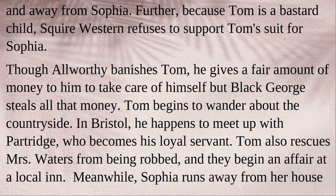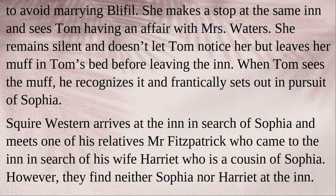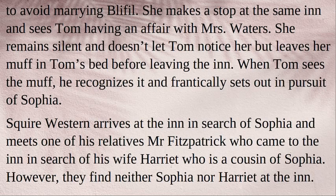In Bristol, Tom happens to meet Partridge, who becomes his loyal servant. Tom also rescues Mrs. Waters from being robbed and they begin an affair at a local inn. Meanwhile, Sophia runs away from home to avoid marrying Blifil. She stops at the same inn and sees Tom having an affair with Mrs. Waters. She remains silent and doesn't let Tom notice her, but leaves her muff in Tom's bed before leaving. When Tom sees the muff he recognizes it and frantically sets out in pursuit of Sophia. Squire Western arrives at the inn in search of Sophia and meets a relative, Mr. Fitzpatrick, who came searching for his wife Harriet — a cousin of Sophia. However, they find neither Sophia nor Harriet at the inn.